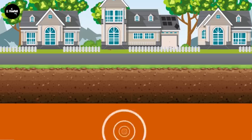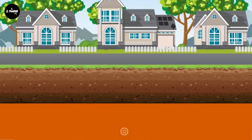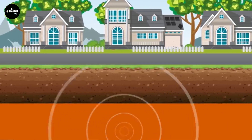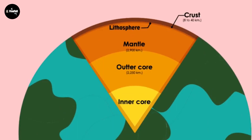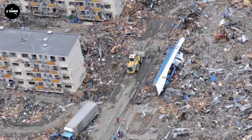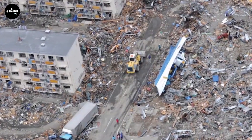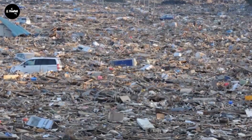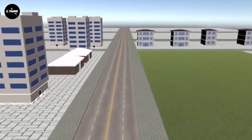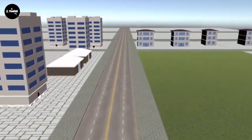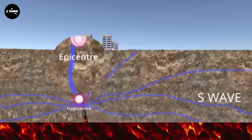The largest cause — accounting for about 90% of earthquakes in the world — is related to changes in the Earth's interior through tectonic fault activities, faults at the edges of lithospheric or tectonic plates. Magmatic activity penetrating into the Earth's crust creates large vibrations.